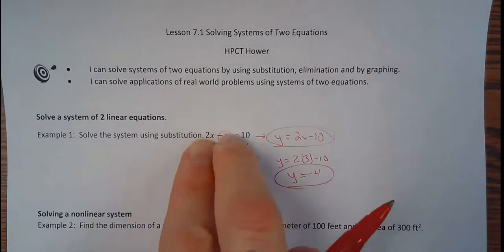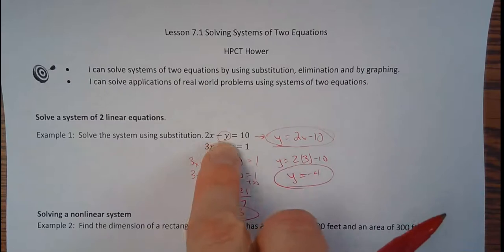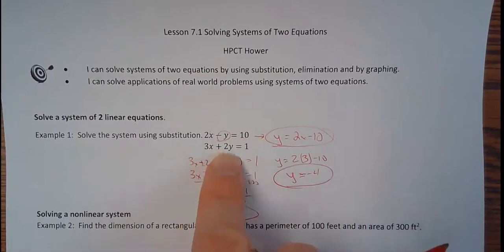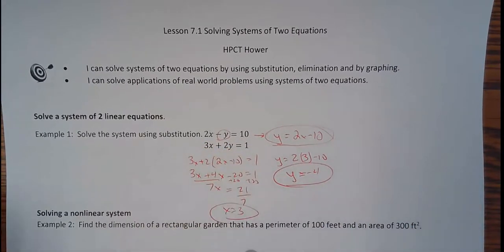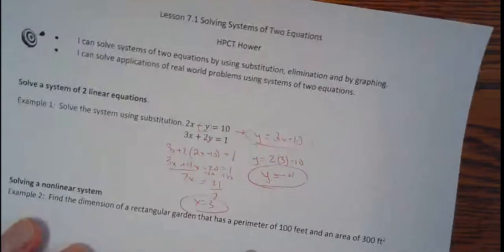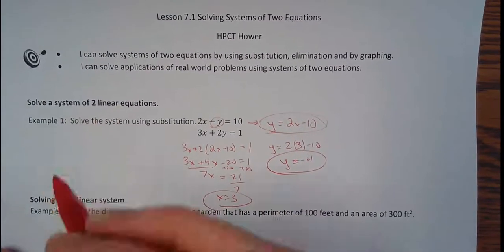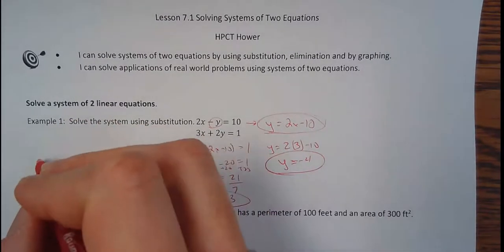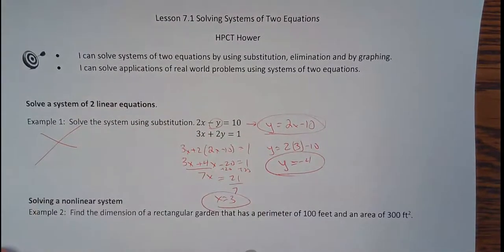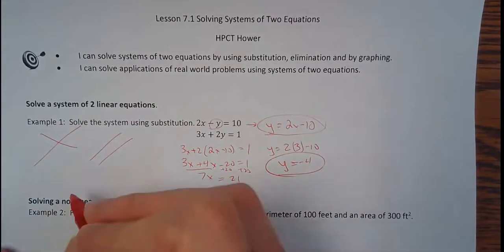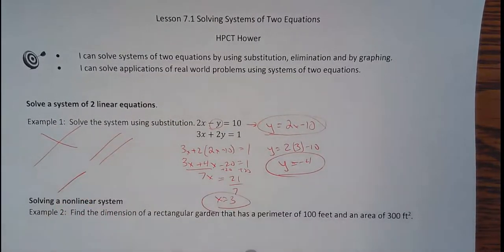So if you want to double-check that, plug them in, plug in 3 and negative 4 for x and y here, you get 10, plug in 3 and negative 4 here, and you get 1. So I know that that is the solution. Now, these were two linear equations. And with lines, you know, the three options here: they could meet once, they could meet never, or they could actually be the same line and have infinitely many solutions on them. That's two linear equations.